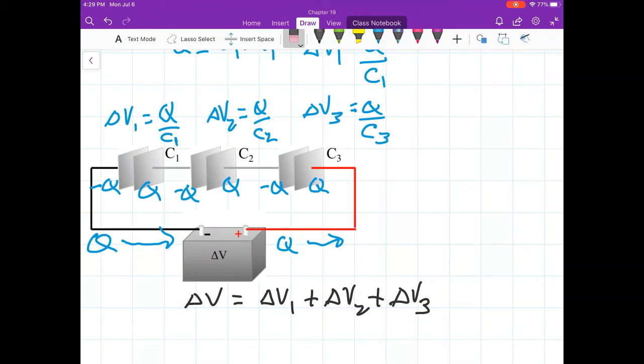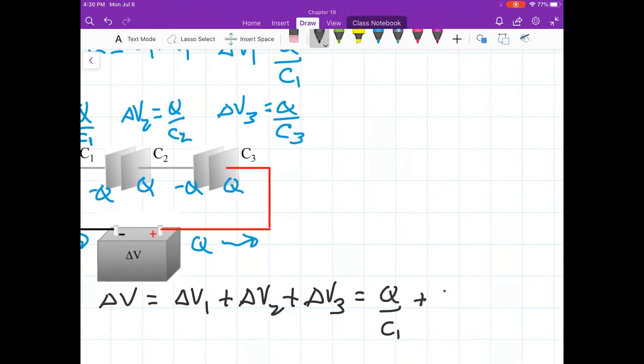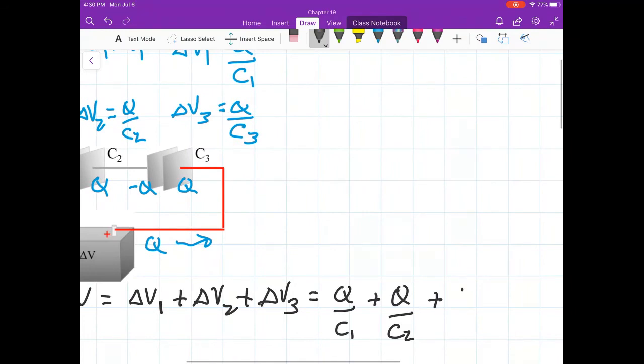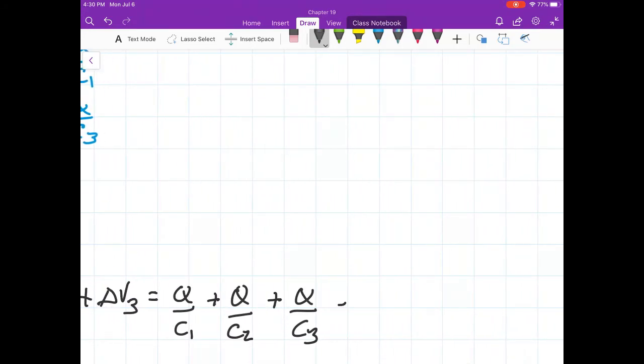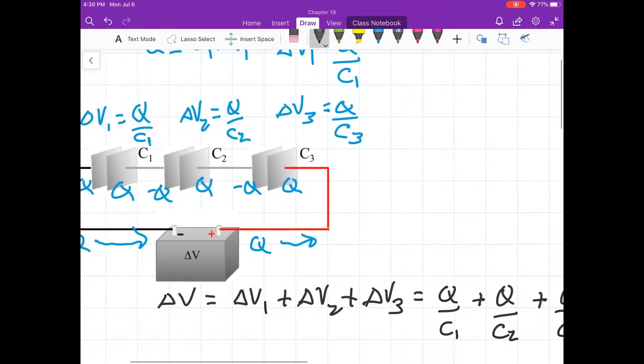Now, because of what I have up there for the capacitors, I know that delta V1, you look up there, is Q over C1. It's right above C1. And the delta V2 is Q over C2. And for the third capacitor, I know that delta V3 is Q over C3. You notice all three have the same Q. So I can rewrite that as, I can factor out the Q, say one over C1 plus one over C2 plus one over C3. That's for delta V.